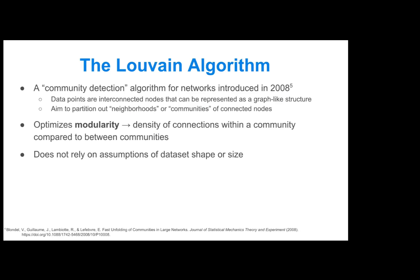So the goal is to minimize the distance between intra-cluster entities and maximize the distance between clusters. The Louvain algorithm does not rely on any assumptions about dataset shape or size. If you think about a graph structure, all you really need is information on the connections between those data points.